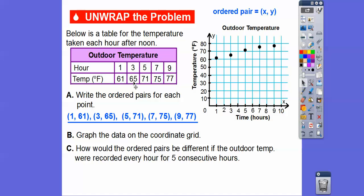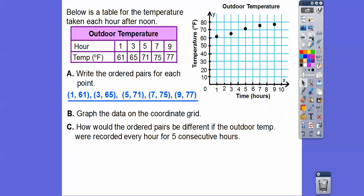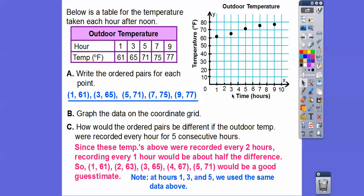From 61 to 65, that is 4 right there. If we go up half of that, that would only go up 2. So it would be 63 right there. Since these temperatures were recorded every 2 hours, recording every 1 hour would be about half the difference. Instead of going up 4 right there, we go up 2.